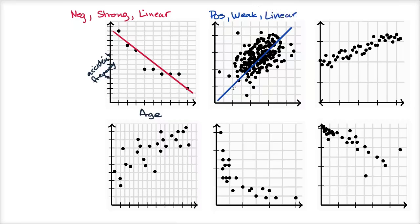There's also the notion of outliers. If this line is trying to describe the data, we have some data that is fairly off the line. For example, even though we're saying it's a positive, weak, linear relationship, this one over here is reasonably high on the vertical variable but low on the horizontal variable — so this one right over here is an outlier, quite far away from the line. This is a little bit subjective — what looks pretty far from the rest of the data? This other point could also be an outlier.